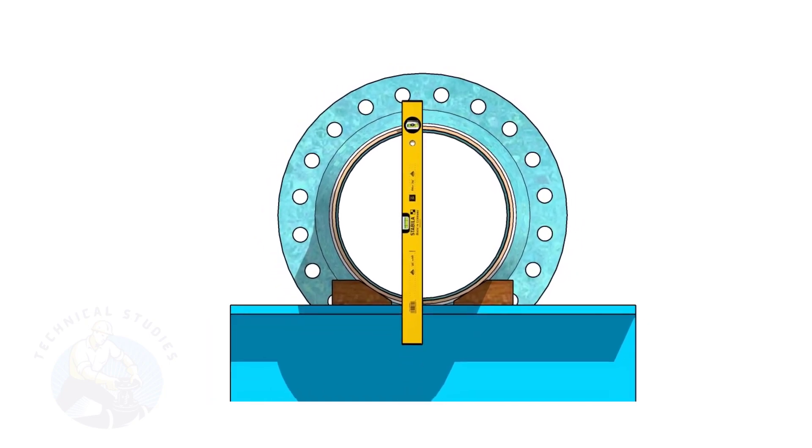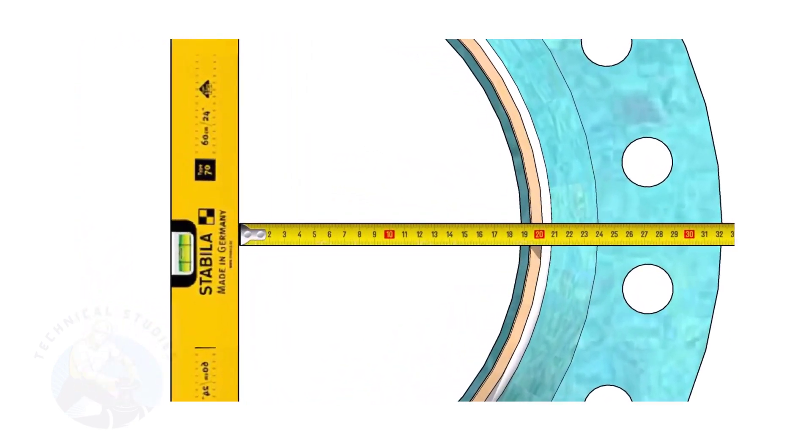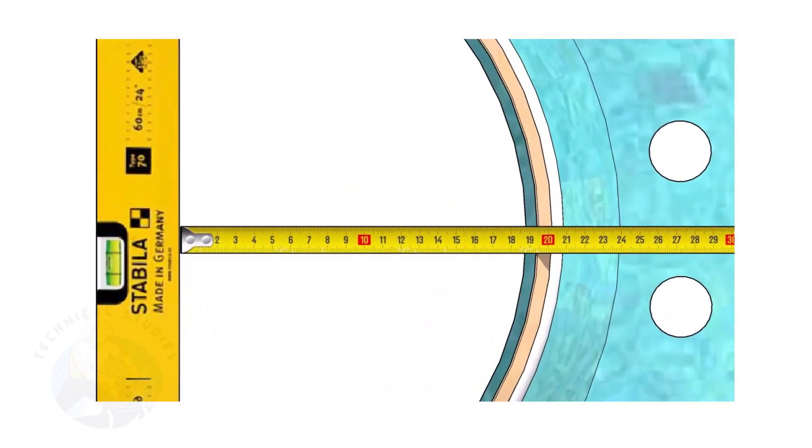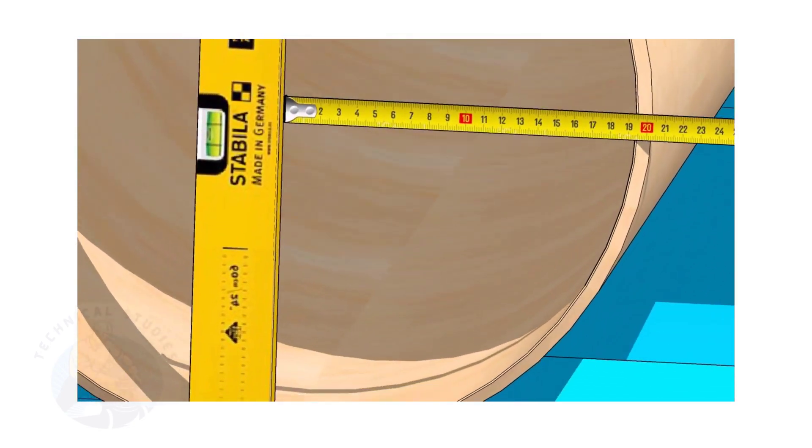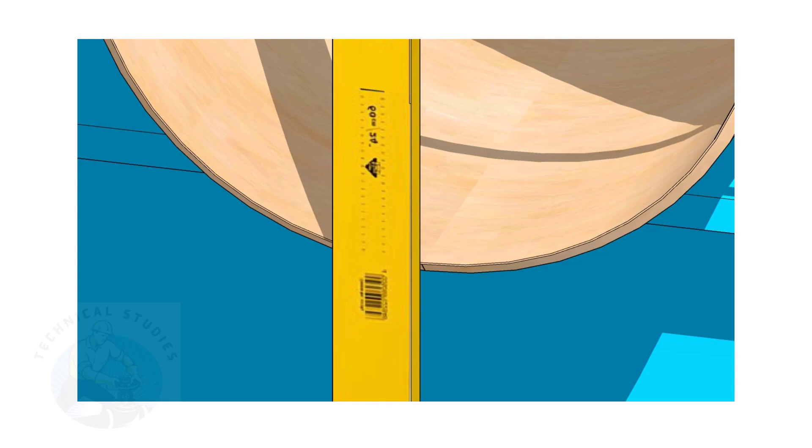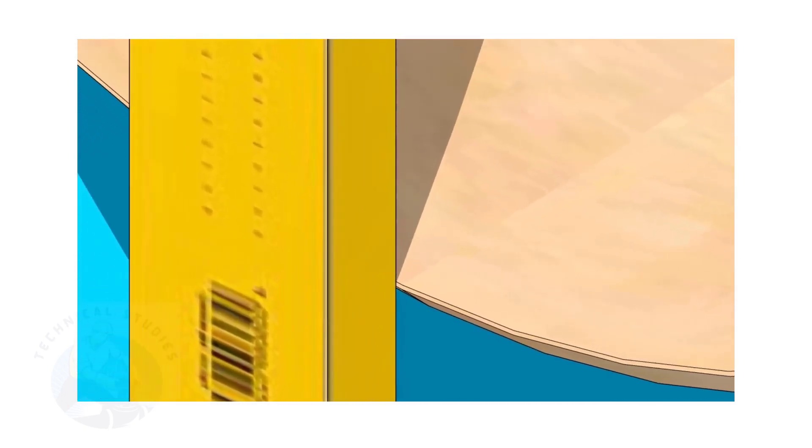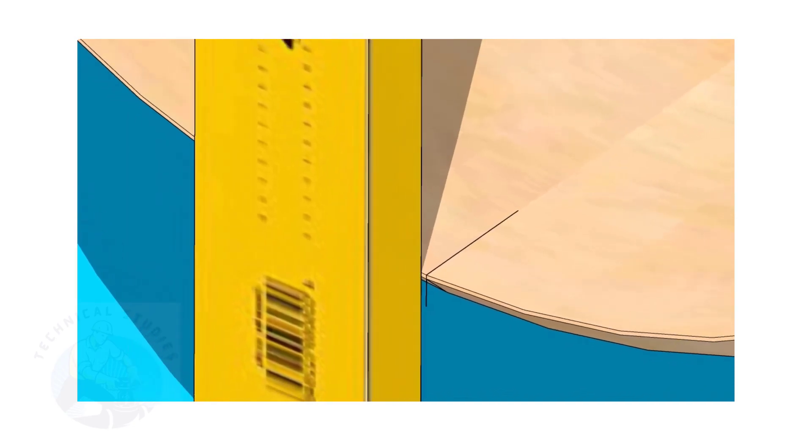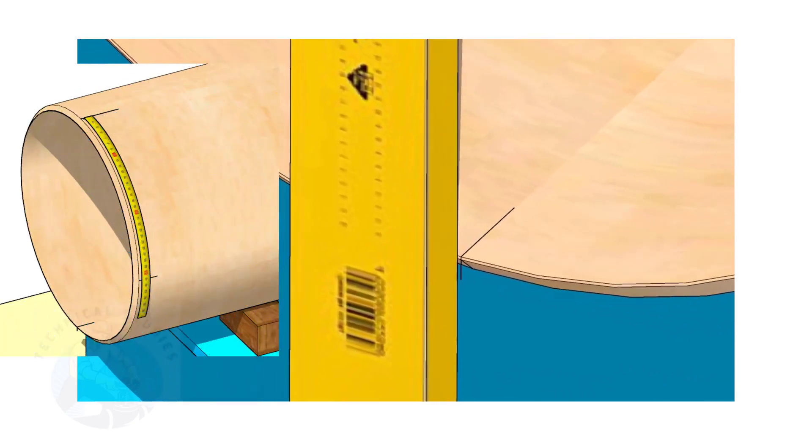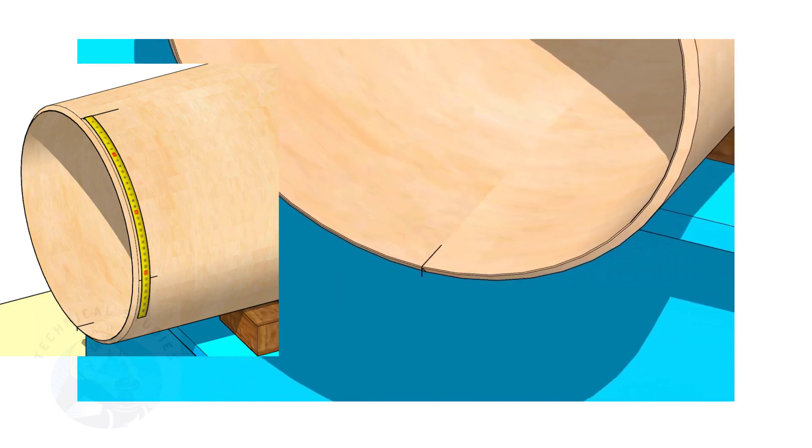Hold the spirit level vertically and transfer the top center mark to the bottom side as shown. Mark the quarter circumference on both sides of the pipe.